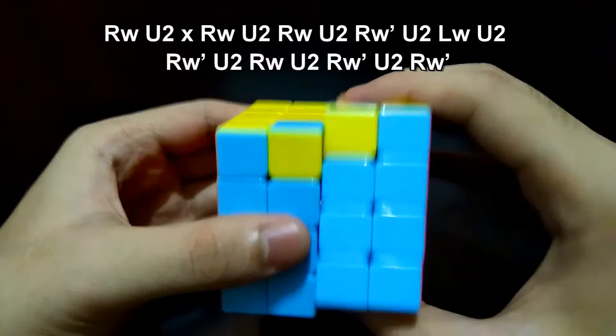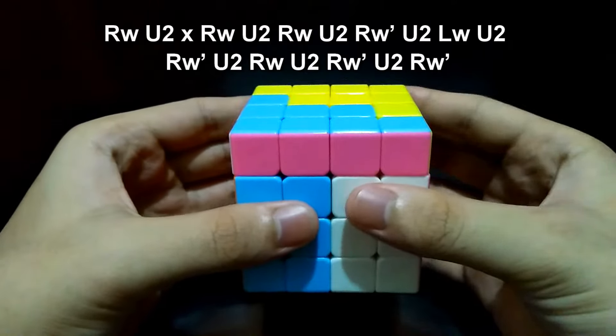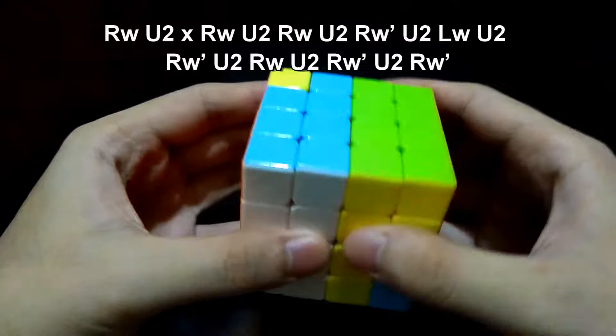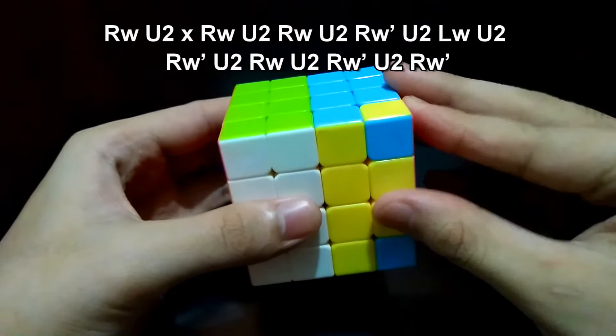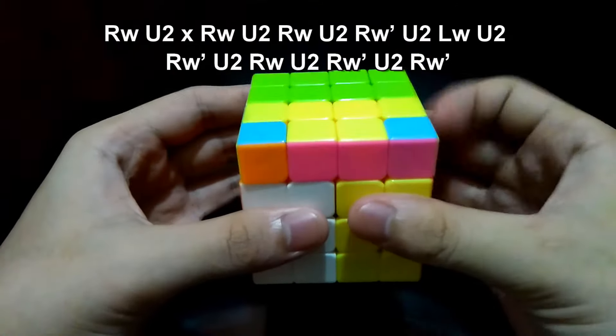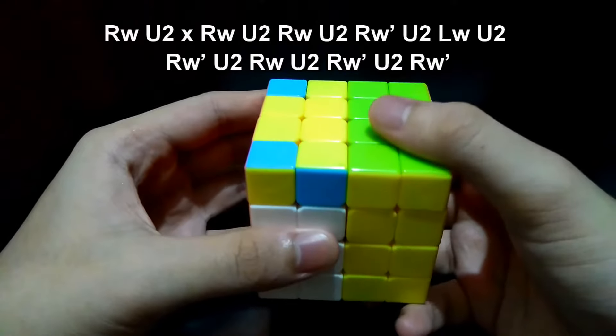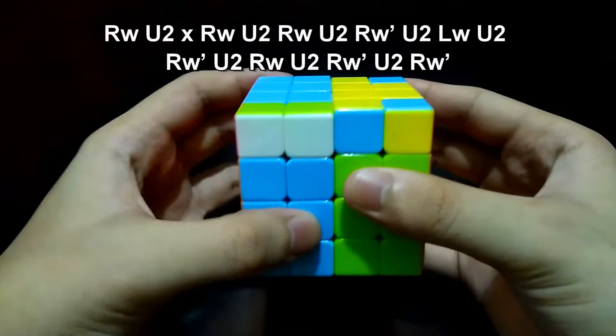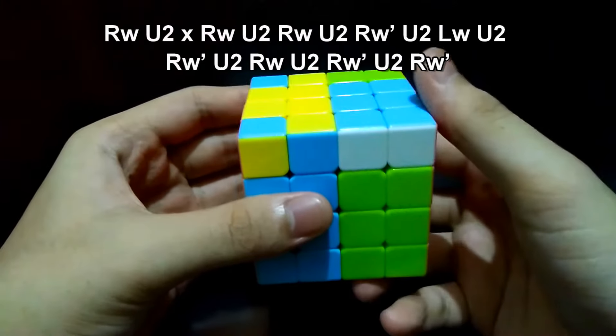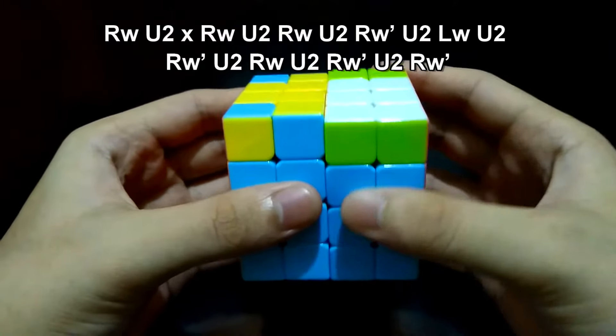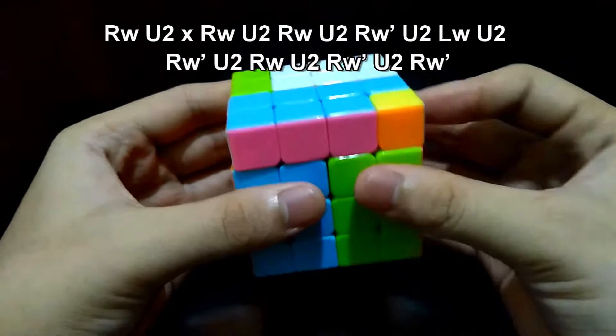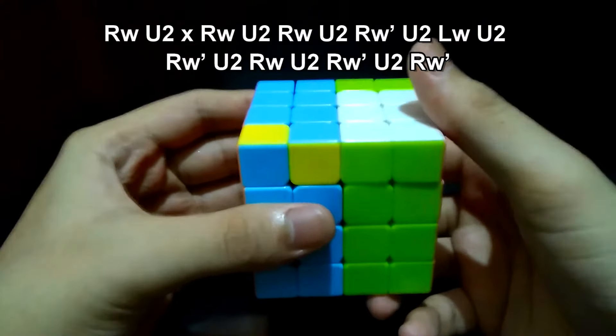Right up 180 degrees, face the bottom, right up 180 degrees, right up 180 degrees, right prime up 180 degrees, left up 180 degrees, right prime up 180 degrees, right prime up 180 degrees, right up 180 degrees, right prime up 180 degrees, and right prime.